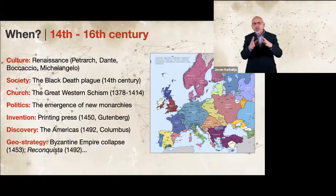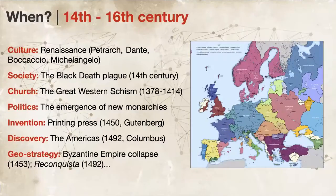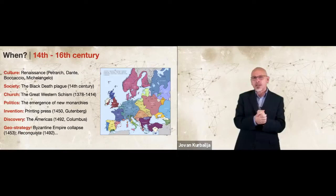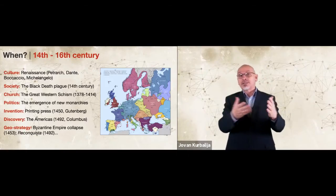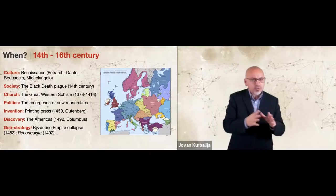In politics during this period, a new type of monarchy gradually emerged in France and Spain. Their goal was to centralize control of power over their territories. They replaced the small network of principalities and duchies. Geostrategically speaking, the Byzantine Empire collapsed with the fall of Constantinople in 1453. Spain emerged as a new power after completing the Reconquista of the Iberian Peninsula in 1492. France was united under Louis XI, Germany was divided into small principalities, Poland and Lithuania were important players in the East, the Grand Duchy of Muscovy started emerging, and in the South we had the Ottoman Empire, almost well-established in the Balkans.